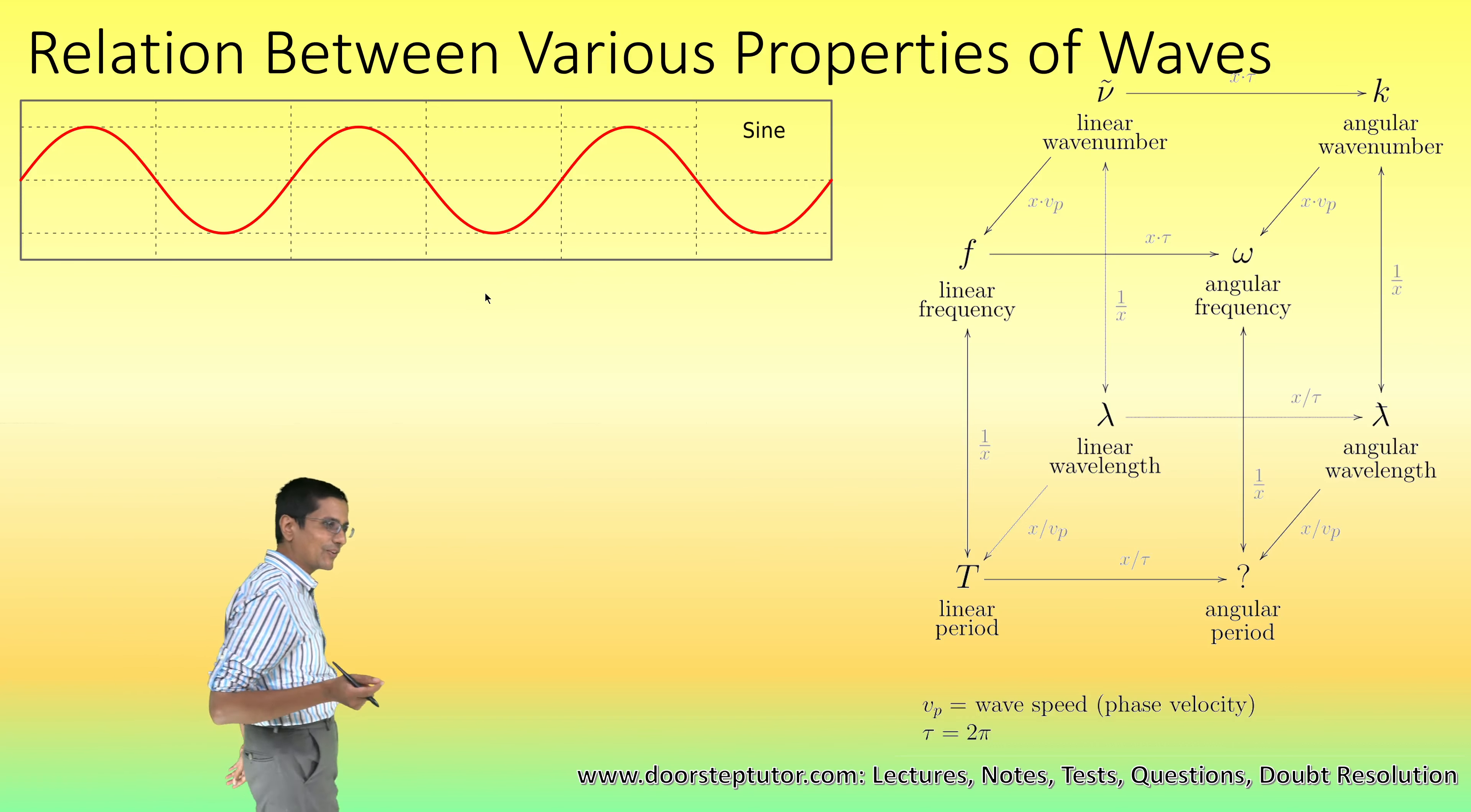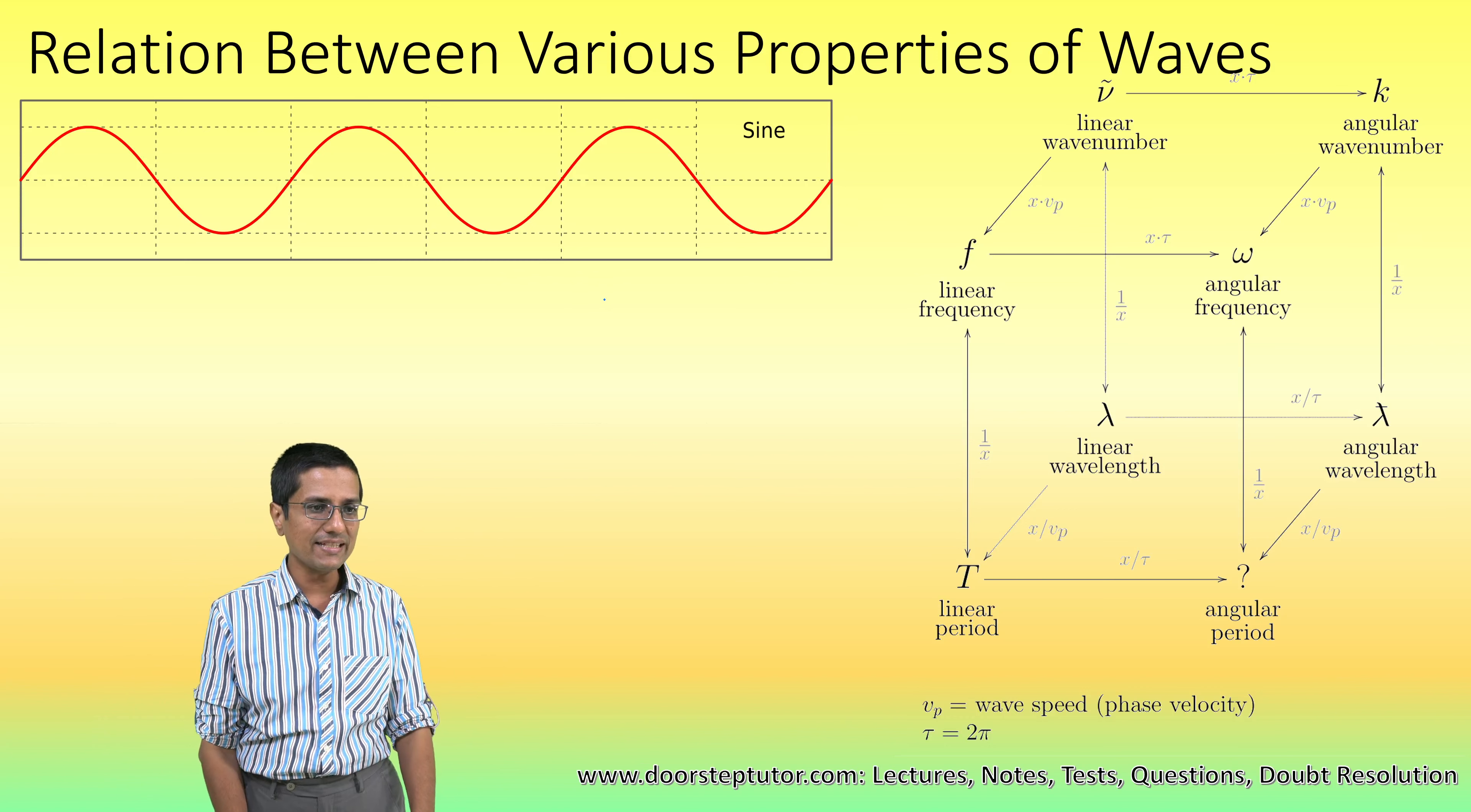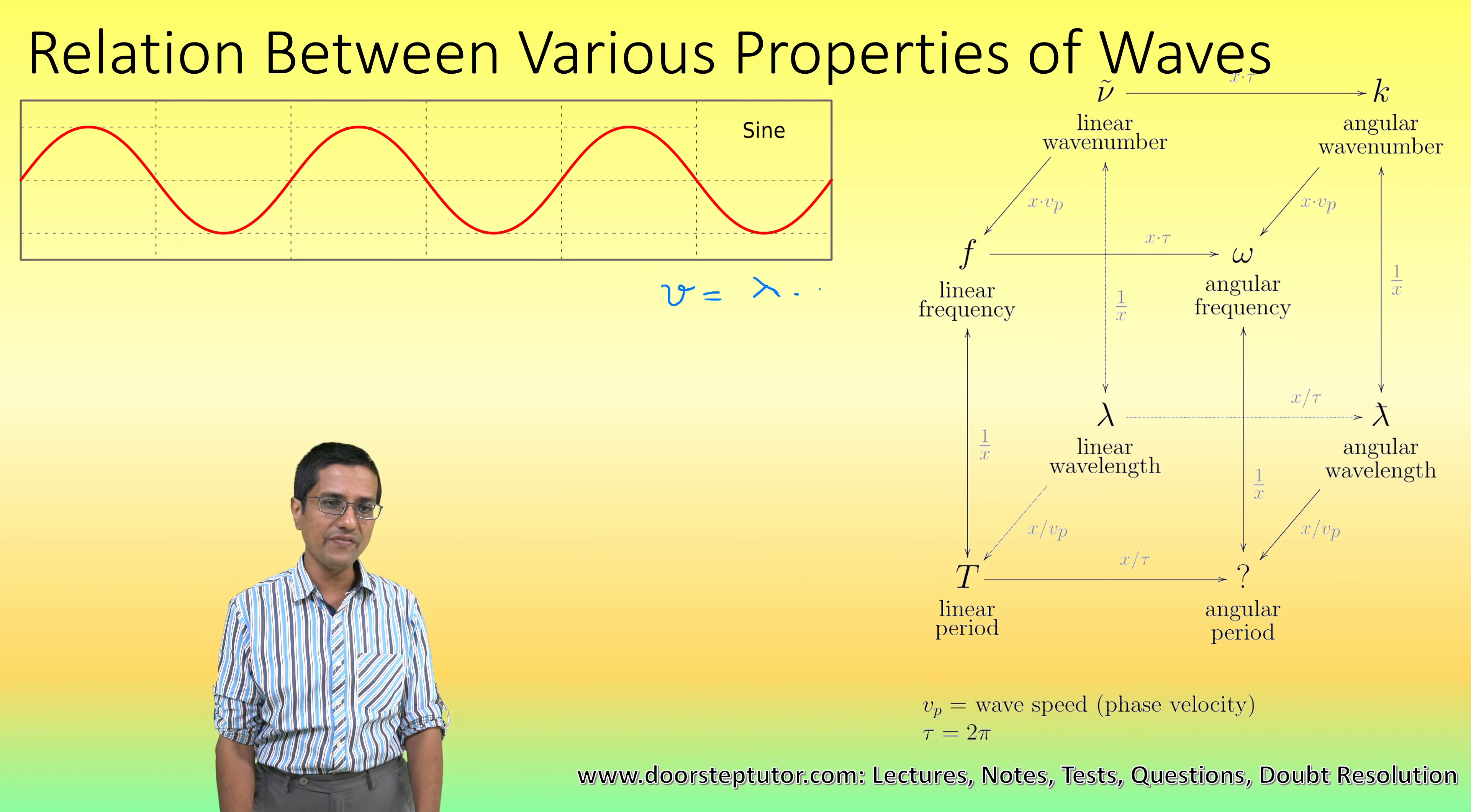Now today we are going to look at a very important concept in the case of waves, and that is the relationship between the wave speed, the lambda which is the wavelength, and the frequency.